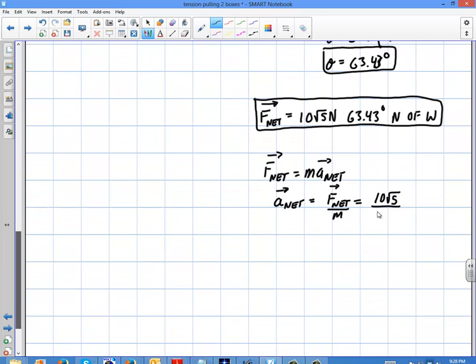So I'm going to go down here and I'm going to write divided by 1,000. So my A net, if I rewrite it down here, is simply going to give me root 5 over 100 meters per second squared.